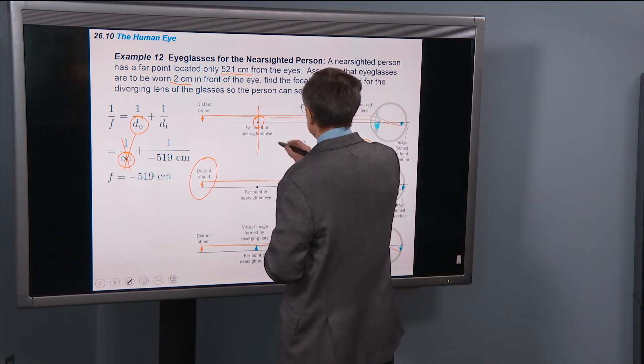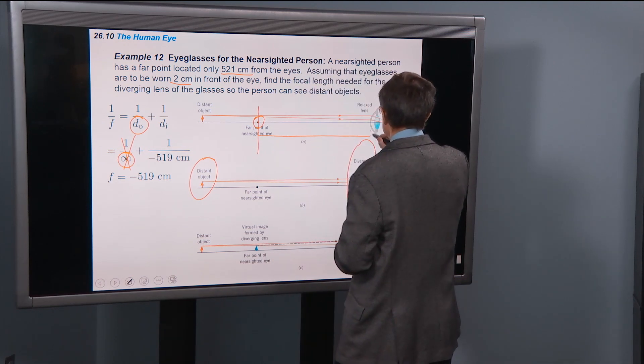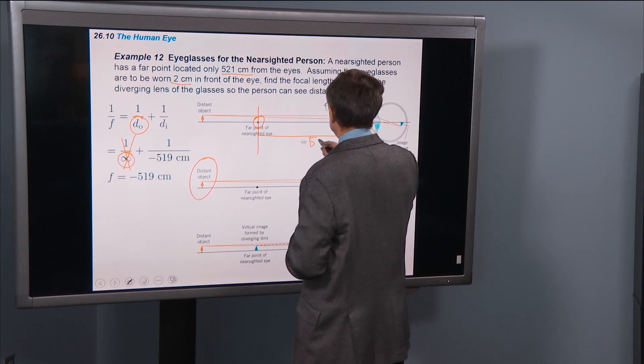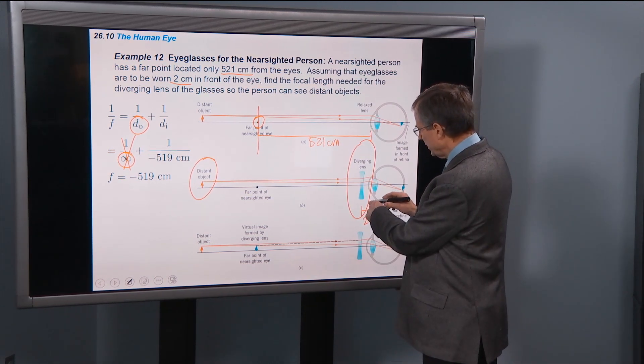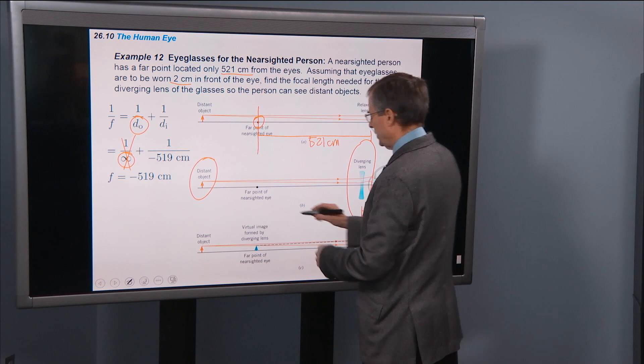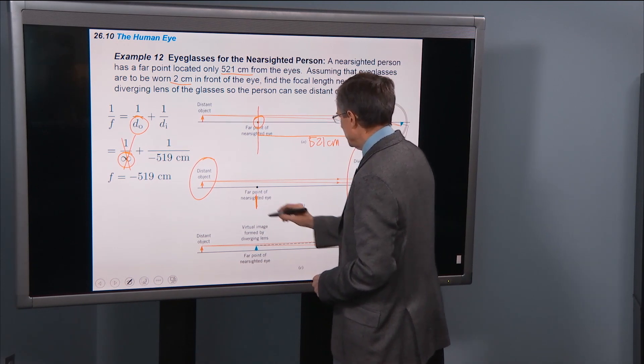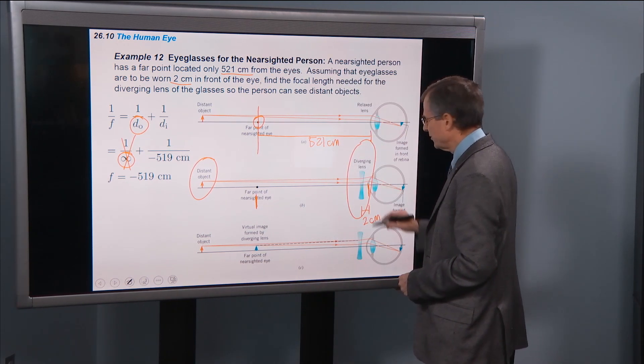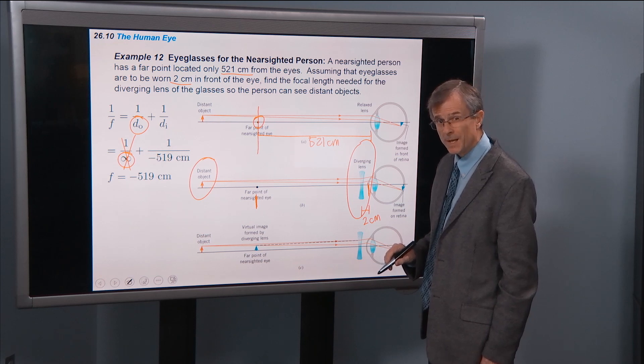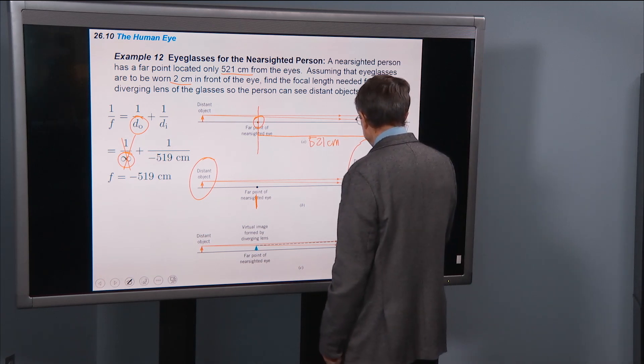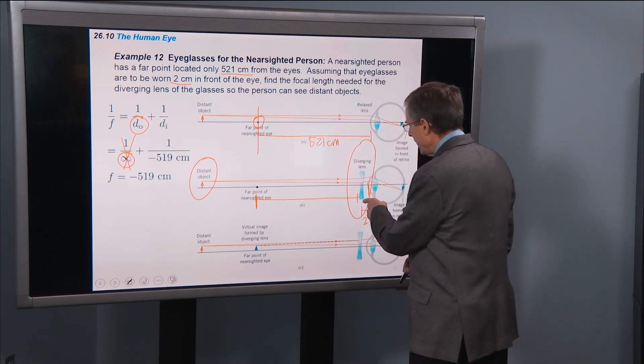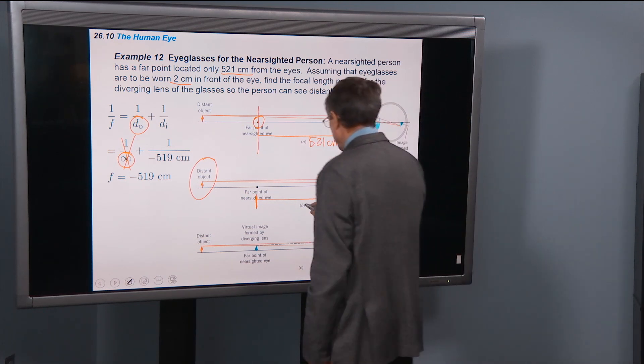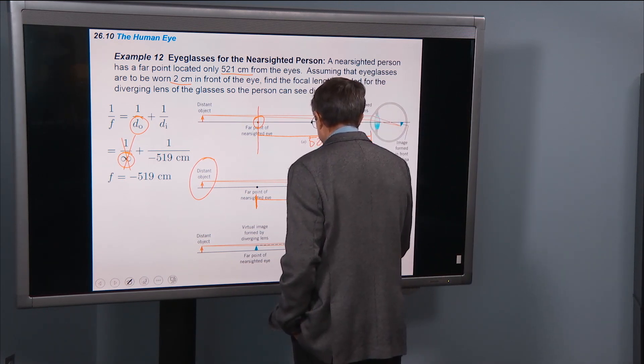Well now we've stuck a diverging lens in between those two things. And the distance between here and here is 521 centimeters. So the distance between this far point and the lens itself is 519 centimeters.